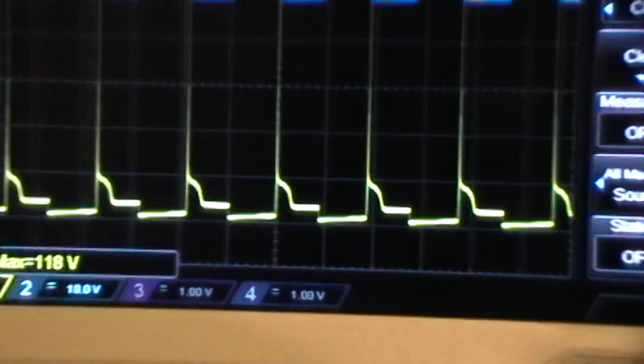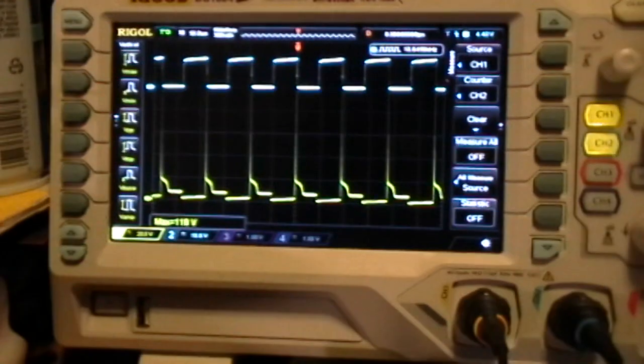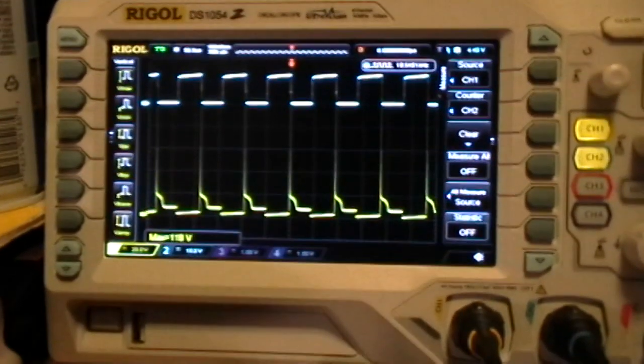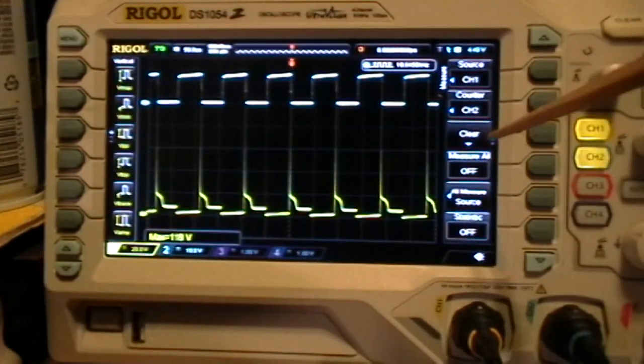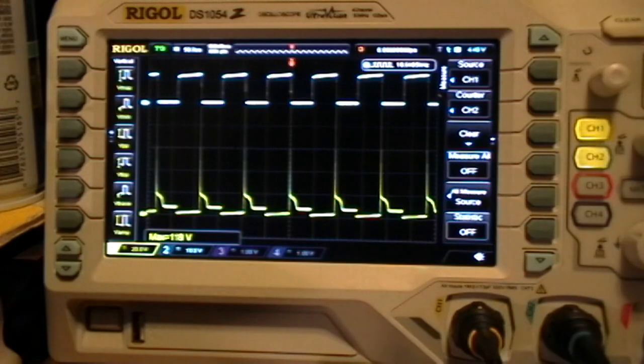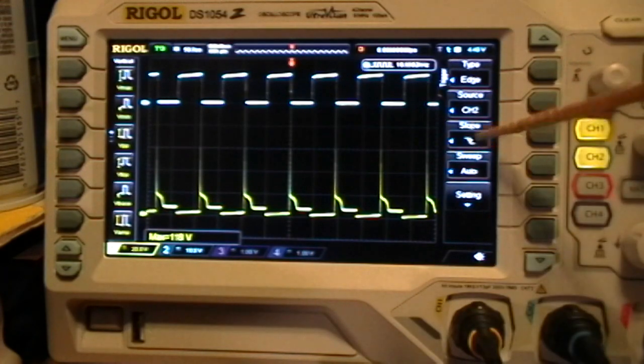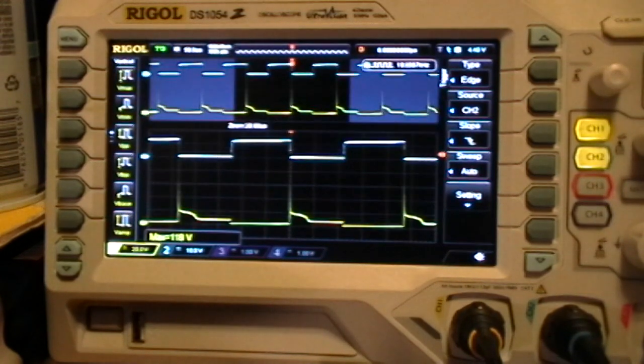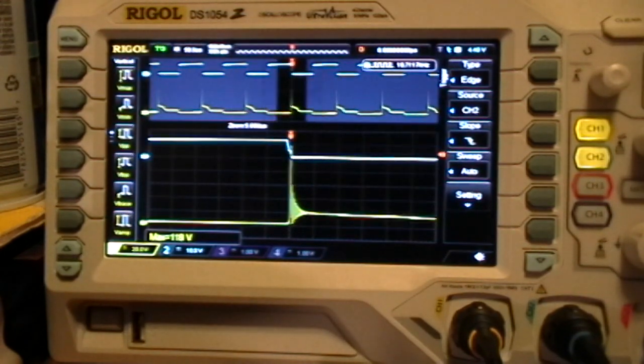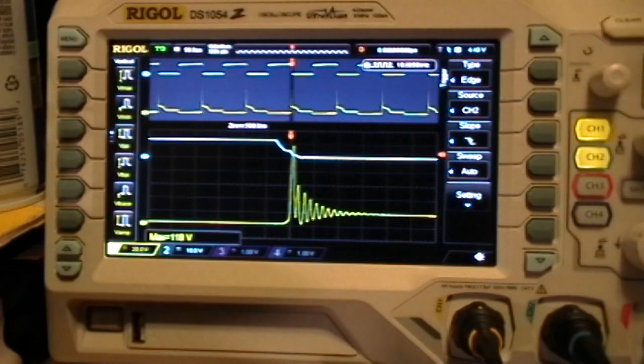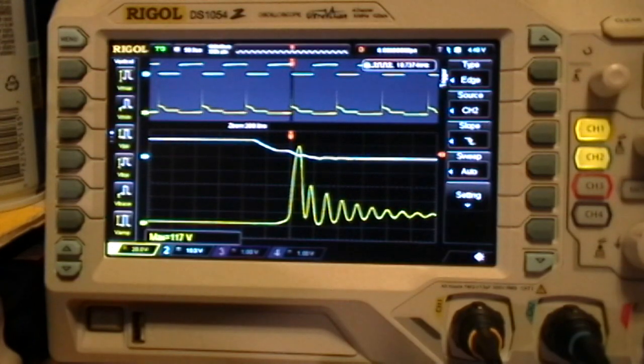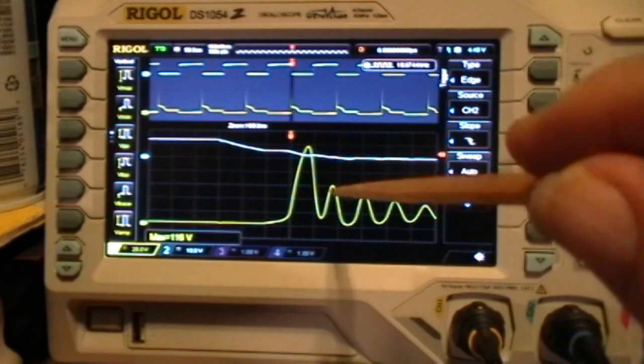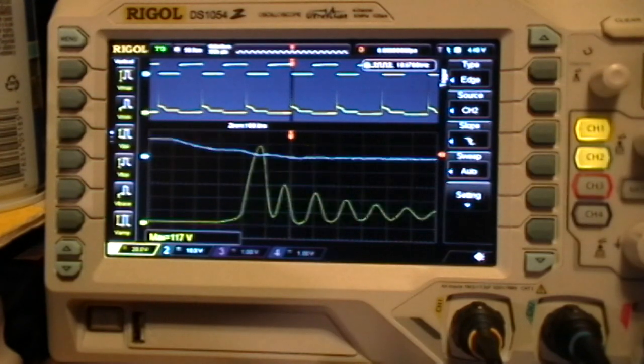See all that? Okay, so let's see, we're triggering on the falling edge of channel 2. So if I go now to the horizontal zoom mode and zoom in on that nice ringing there. Right there. Let's move it over a little bit.